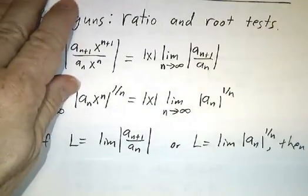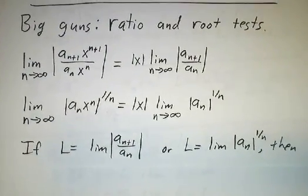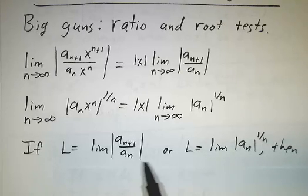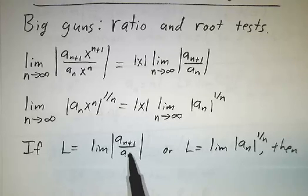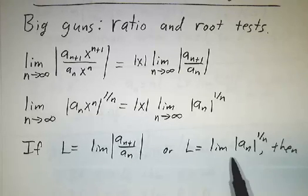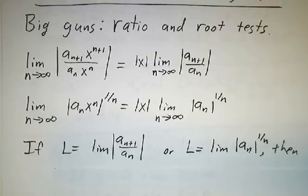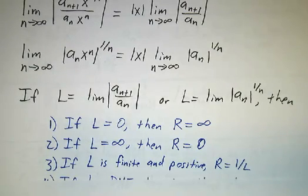So the rule is that if you get a number by either of the two tests, and if you get the number by one test, you're going to get the same number by the other test. So if you get a number, let's call it L, which is the limit of the ratio of coefficients, or L is the limit of the nth root of the nth coefficient, if that happens, then that gives you the radius of convergence.